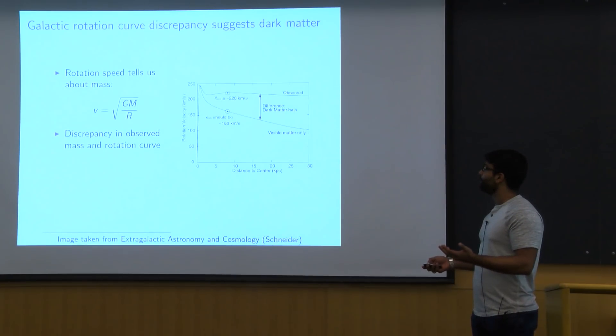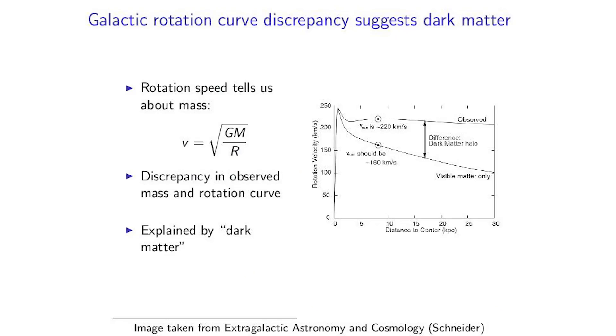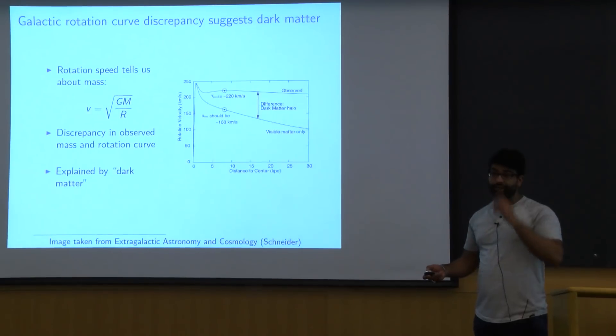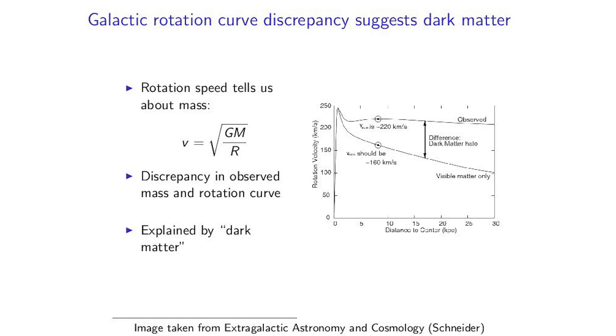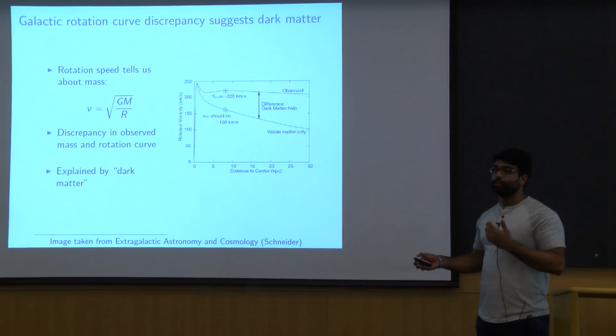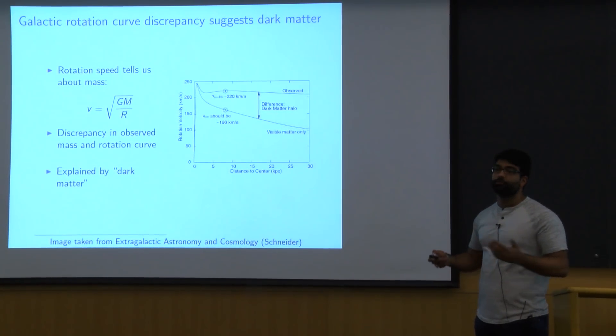And basically, the way that we might be able to explain this is possibly there's matter out there that we just can't see. And physicists term this matter as dark matter. So what we're going to be working on in this experiment is trying to be able to actually plot this rotation curve. And in being able to show these discrepancies, this will kind of motivate new physics.